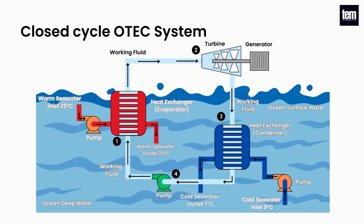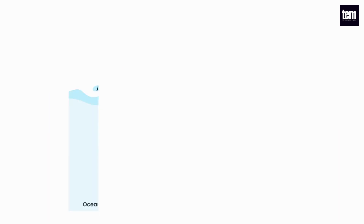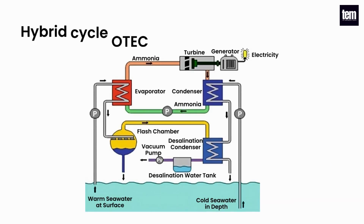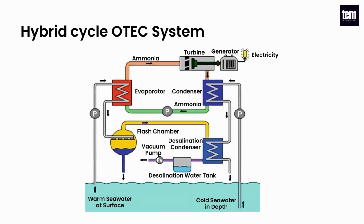Closed cycle systems use fluid with a low boiling point, such as ammonia, to power a turbine to generate electricity. Open cycle systems use warm surface water directly to make electricity. A hybrid cycle combines the features of the closed and open cycle systems.